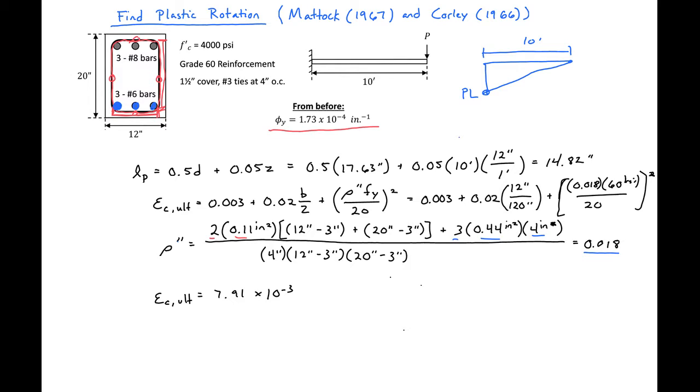From before, from our cross section analysis, we found that our C, or the depth of our neutral axis, was 3.15 inches.